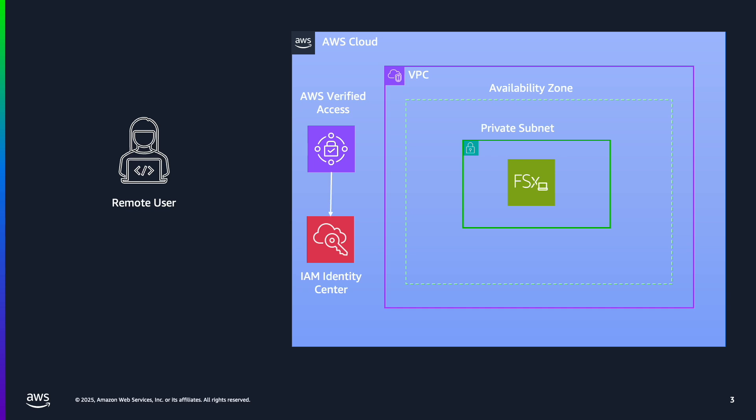Once you deploy the prerequisites, you will have a deployment architecture similar to this. There will be an FSx Windows File Server deployed in a single availability zone and an AWS Verified Access instance configured with a trust provider. In this case, the trust provider is IAM Identity Center. In the rest of the video, I will show how to configure AWS Verified Access to allow secured access to the FSx file share by a remote user.